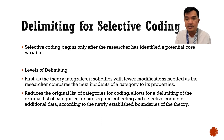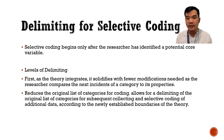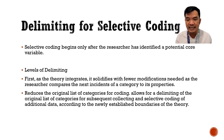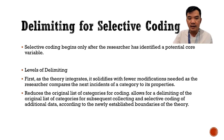On the first part, the theory integrates. Once you have integrated some of the incidents or codes based on your core category, you will now combine some of the codes. One category will cover some of the incidents, so some categories must be eliminated or will be part only as an indicator of a certain category. The second level allows delimiting of the original list of categories for subsequent collection and selective coding, since we now have the core categories to help limit the number of categories to be included.